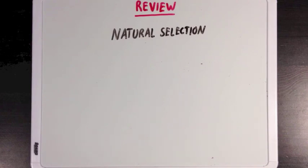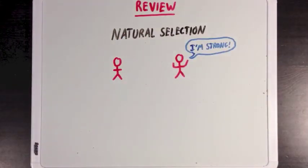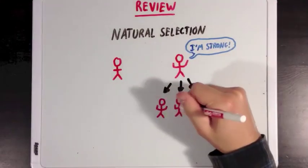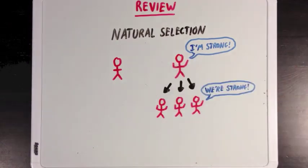If you have a member of a population that has a special genetic trait like being really strong, then that person is more likely to live to an age where he or she can reproduce and pass on that special trait to offspring.